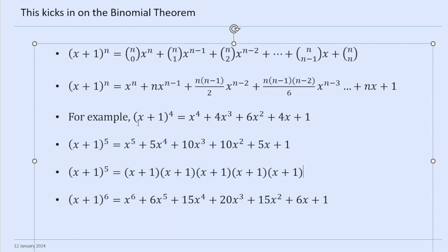Here are some examples. (X + 1) to the power 4 is X to the 4 plus 4X cubed plus 6X squared plus 4X plus 1. Then (X + 1) to the power 5 is X to the 5 plus 5X to the 4 plus 10X cubed plus 10X squared plus 5X plus 1. And (X + 1) to the power 6 is X to the 6 plus 6X to the 5 plus 15X to the 4 plus 20X cubed plus 15X squared plus 6X plus 1. You can multiply it out longhand and you'll get the same results.